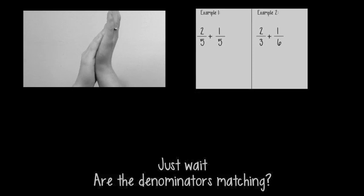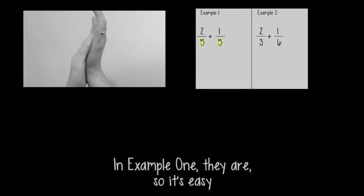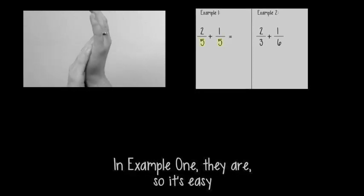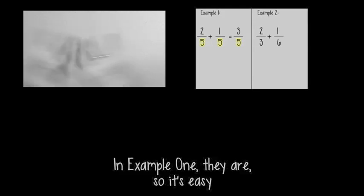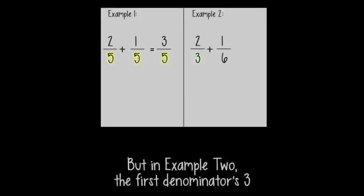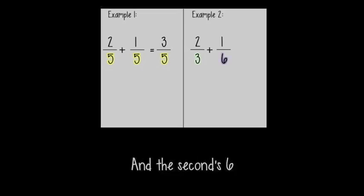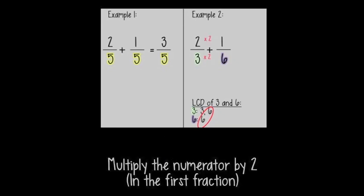Just wait — are the denominators matching? In example 1 they are, so it's easy. But in example 2, the first denominator's 3 and the second is 6, so multiply the numerator by 2 in the first fraction.